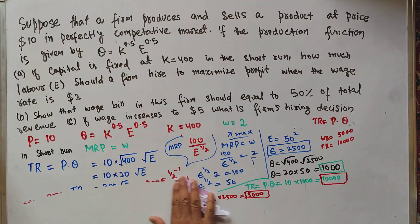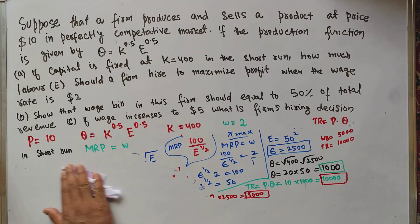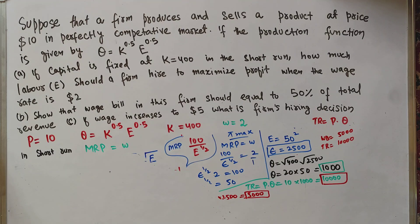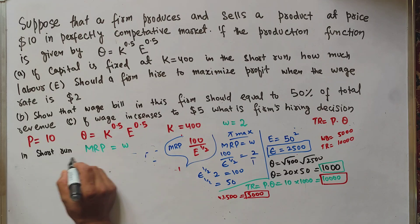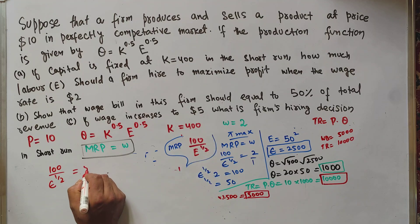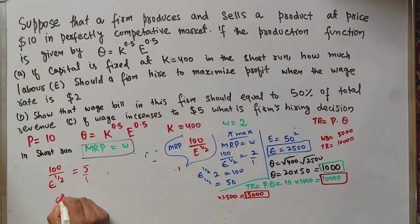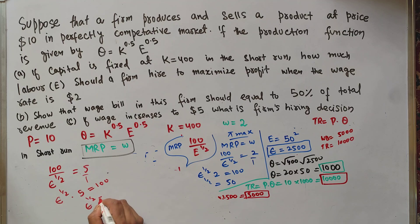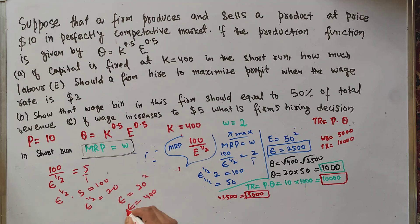For the next part, if the wage rate increases to $5, we again equate marginal revenue product with the new wage rate: 100 / E^(1/2) = 5. Cross-multiplying: E^(1/2) = 100/5 = 20. Squaring: E = 400. If the wage rate increases to $5, the firm will hire only 400 units of labor.